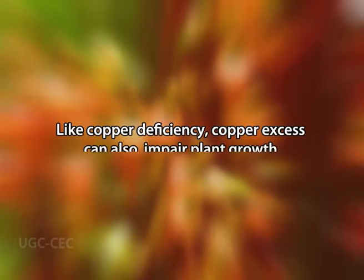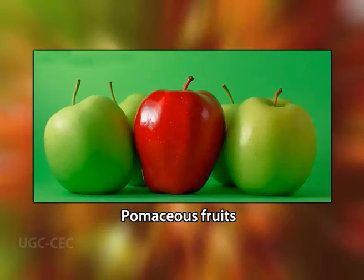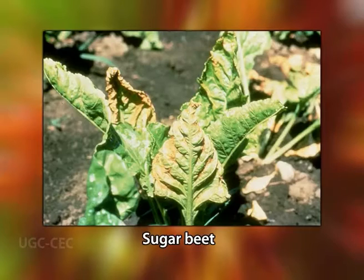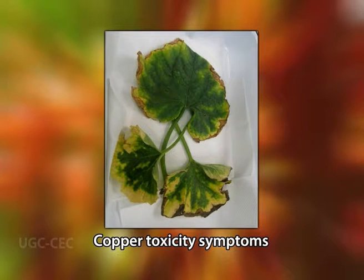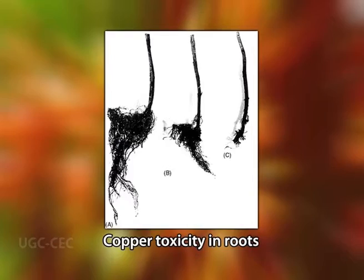Like copper deficiency, copper excess can also impair plant growth. Stone fruits are more susceptible to copper toxicity than pome fruits or grapes. In sugar beet, copper excess causes chlorosis of leaves similar to that induced by iron deficiency. If copper concentrations are very high, the damage is similar to that caused by other heavy metals: reddish-brown necrotic lesions, sometimes accompanied by chlorosis, appear at the tips and margins of old leaves and spread into the leaf blades. Younger leaves are unusually dark green, the roots die, and in cases of severe toxicity the plants die or seedlings fail to develop.